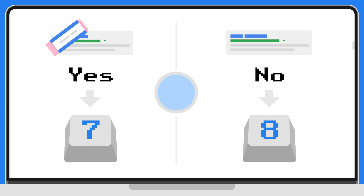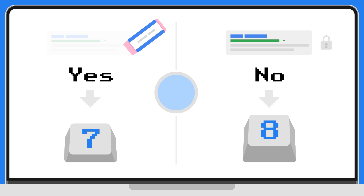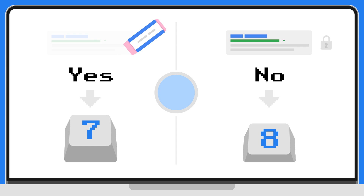Should you delist the information on the government website? For yes, press seven. For no, press eight.